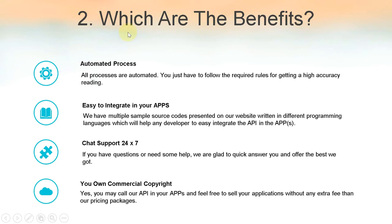Which are the benefits? Automated process — all processes are automated, you just have to follow the required rules for getting a high accuracy reading. Easy to integrate in your apps — we have multiple sample source codes on our website in different programming languages to help any developer integrate the API easily. Chat support 24/7 — if you have questions or need help, we are glad to quickly answer you. You own commercial copyright — call our API in your apps and feel free to sell your applications without any extra fee.